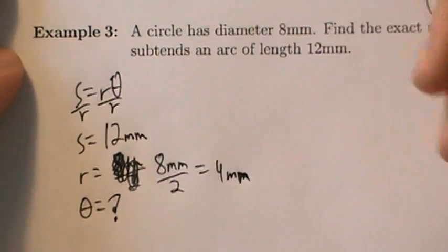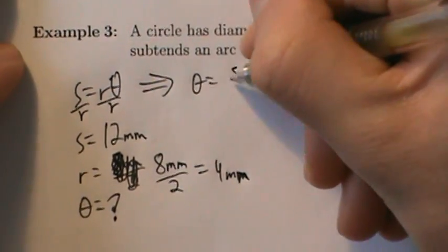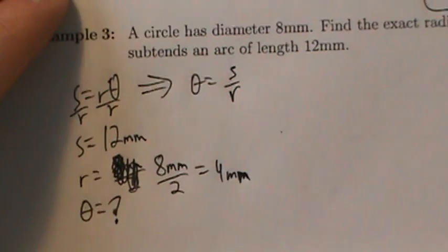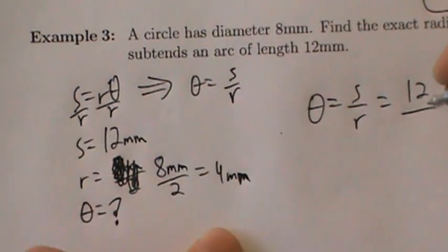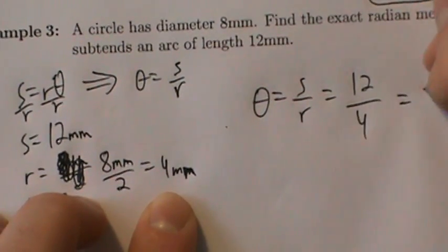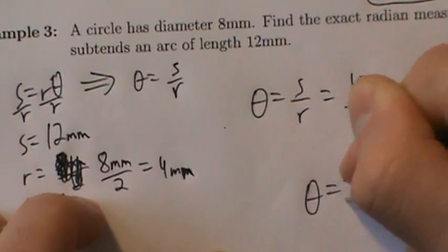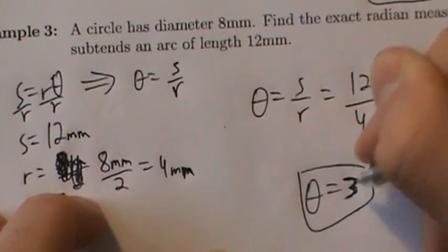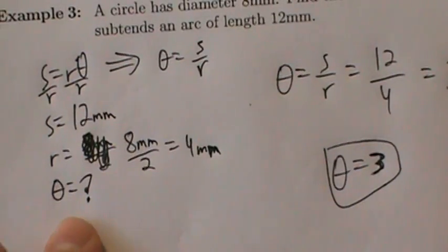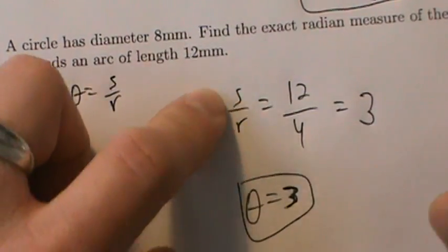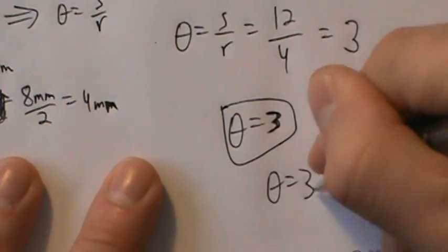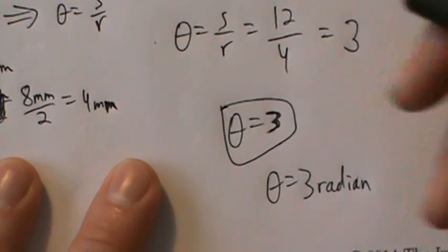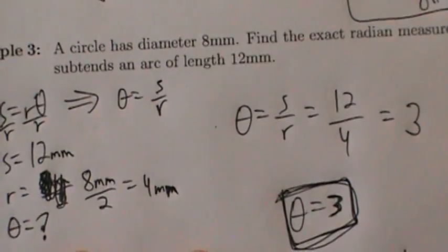We want to find the exact radian measure of the central angle, so we're looking for theta. This theta subtends an arc of length 12 millimeters, so s = 12 millimeters. Dividing both sides of s = r*theta by r gives theta = s/r — which is the original formula from when we defined radians. Plugging in: theta = 12/4 = 3. Theta is already in radians because of how the formula works, so no matter what units s and r have, theta will always be in radians. So theta = 3 radians. That's three examples of arc length.